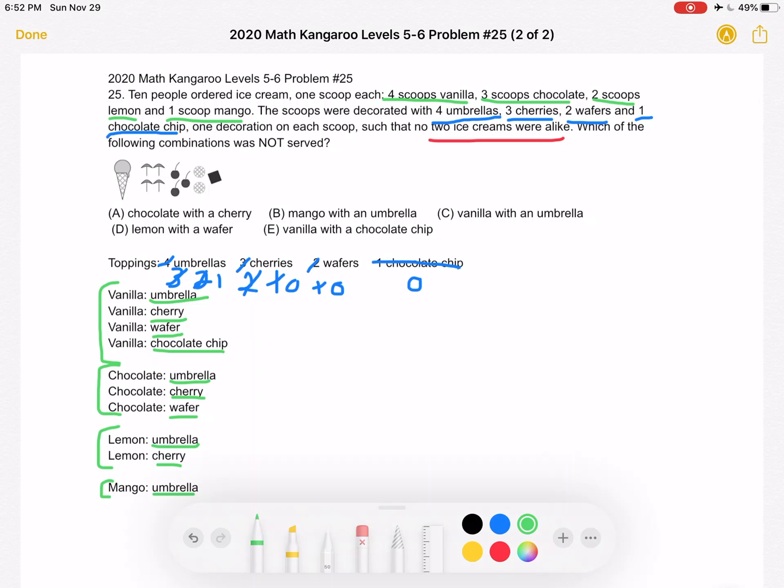So now let's go back to the problem. We want to see which of the following combinations was not served. So let's go through each answer choice. Answer choice A is chocolate with a cherry. Let's look at chocolate, cherry, it's right here. It is served, so it's not the correct answer. We can cross it off.